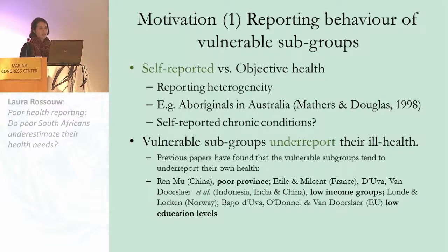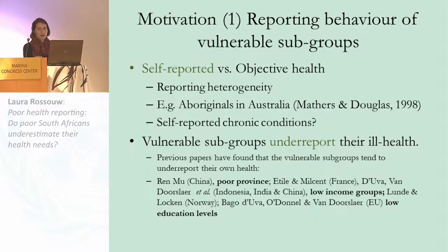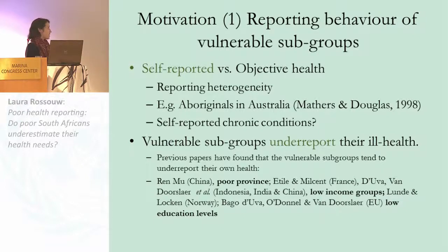I'll be looking at the overall self-assessed health question — evaluating your health on a scale from 1 to 5. When asking somebody to evaluate their health this way, people use different reporting scales when analyzing their own health. Saying that your health is excellent might mean one thing for one subgroup and something different for another. When one subgroup systematically overestimates or underestimates their health, this can bias your health measures.